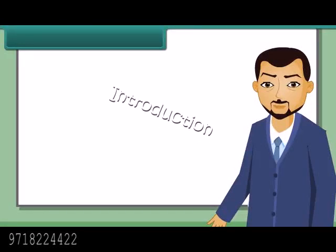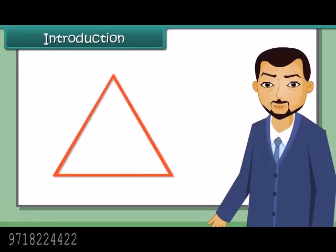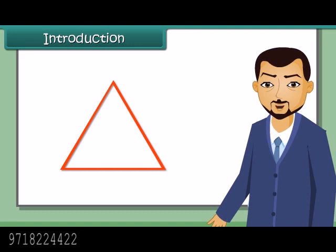We have seen that a triangle has six parts: three sides and three angles. But to construct a triangle, you need to know only three parts. So we can construct a triangle using the SAS, ASA, SSS, and RHS axioms.